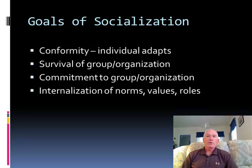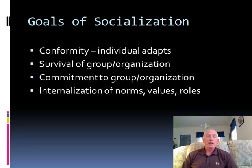Recall the attraction-selection-attrition framework. Typically certain individuals are attracted to certain types of groups. Groups typically only accept members who are most like them, or those they believe are most likely to become like them. Finally, those people who cannot fully integrate into the group — who do not become like members of the group — are typically somehow removed from the group.